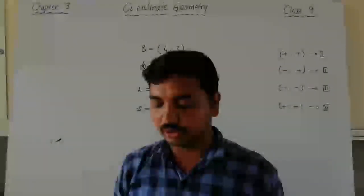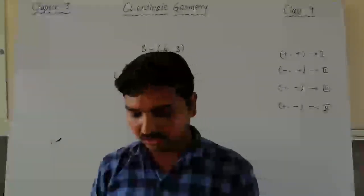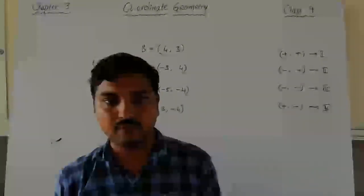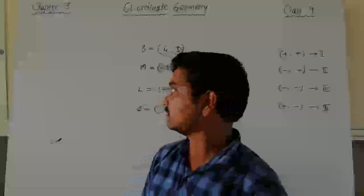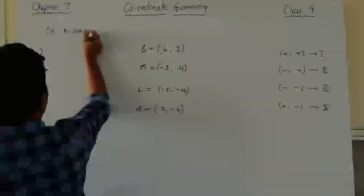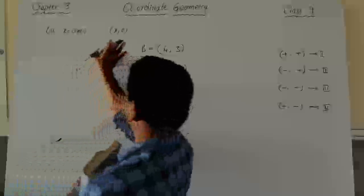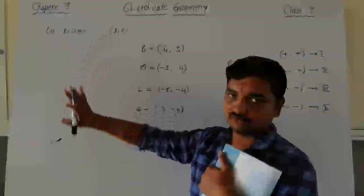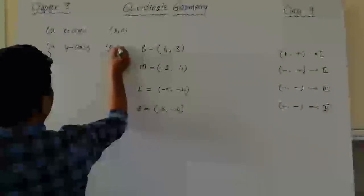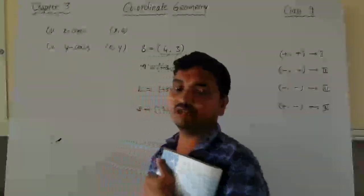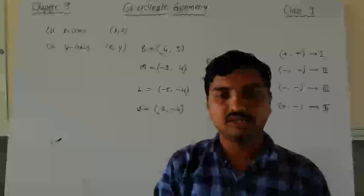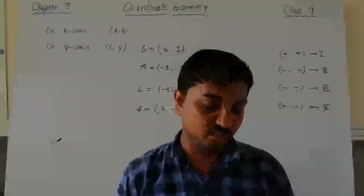Example 2 is similar, but dotted lines are not given, and most points lie on the axes. Remember: whenever a point lies on the x-axis or y-axis, one coordinate automatically becomes zero. If it lies on the x-axis, its general form is x comma 0 — the y-coordinate is zero. If it lies on the y-axis, its form is 0 comma y — the x-coordinate becomes zero. This is very important to remember.